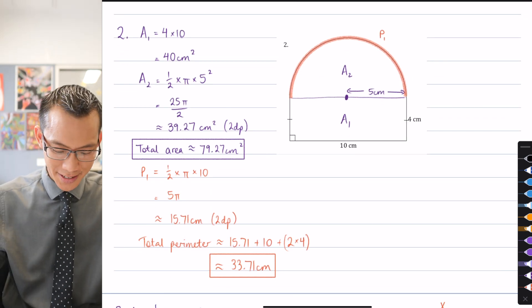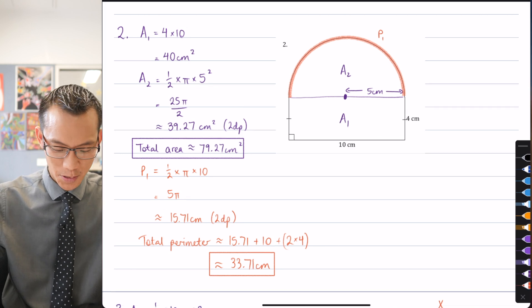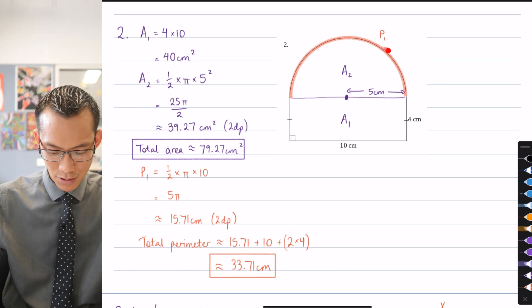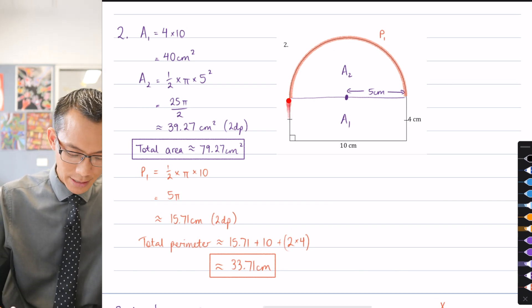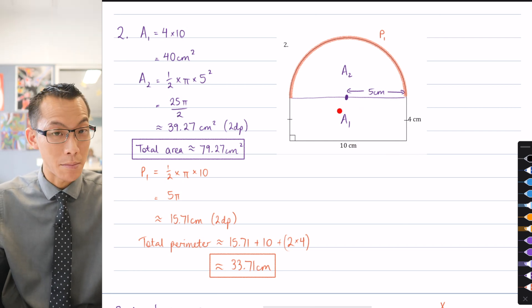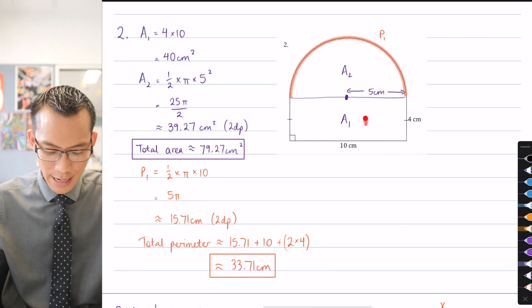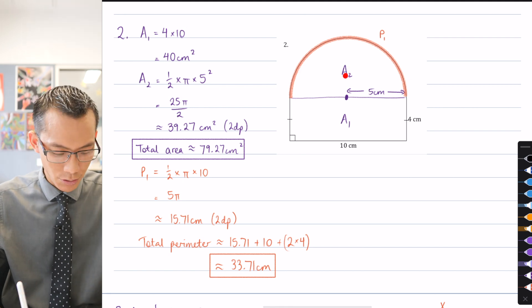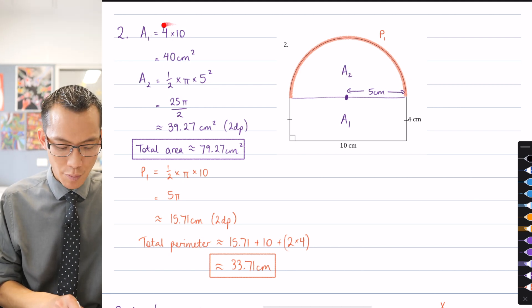All right, question two here. There's a nice little archway, which is composed of a semicircle across the top. And then you've got this rectangle that's attached to it underneath. So again, I've just given some names here. Area one is this rectangle. Area two is the semicircle. And so I've just done length times breadth over here.